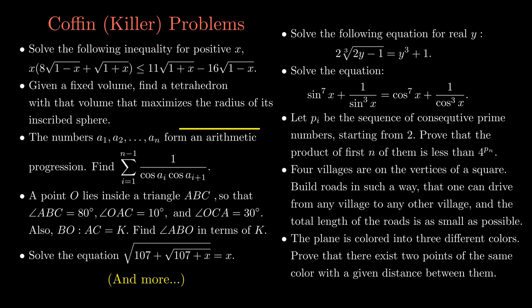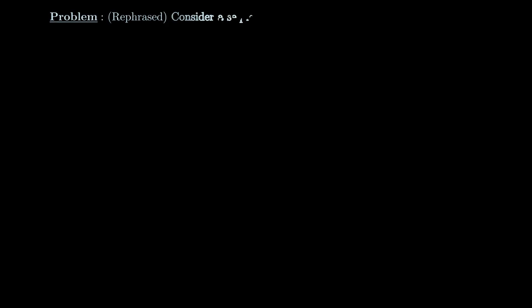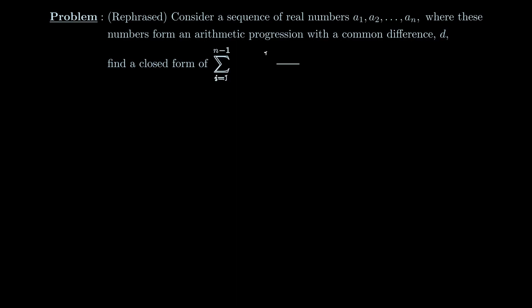Today we are going to look at one of the coffin problems to solve. Consider a sequence of real numbers a₁, a₂, up to aₙ, where these numbers form an arithmetic progression with a common difference d. Find a closed form of the sum from i equals 1 to n-1 of 1 over cosine aᵢ times cosine aᵢ₊₁.